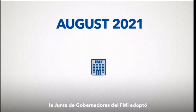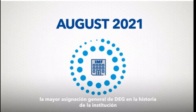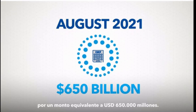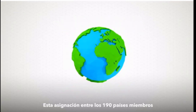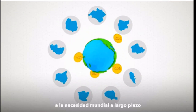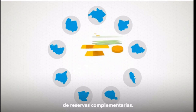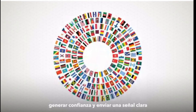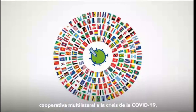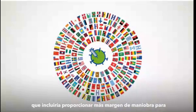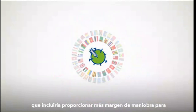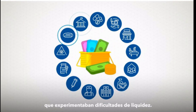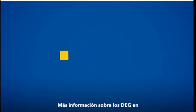In August 2021, the IMF's Board of Governors adopted the largest ever general allocation of SDRs, equivalent to $650 billion. This allocation among 190 member countries was adopted to help meet the long-term global need to supplement reserve assets. Another important objective was to help build confidence and send a powerful signal of a cooperative, multilateral response to the COVID-19 crisis, including providing more scope for spending on crisis response in liquidity-constrained emerging market and developing economies.